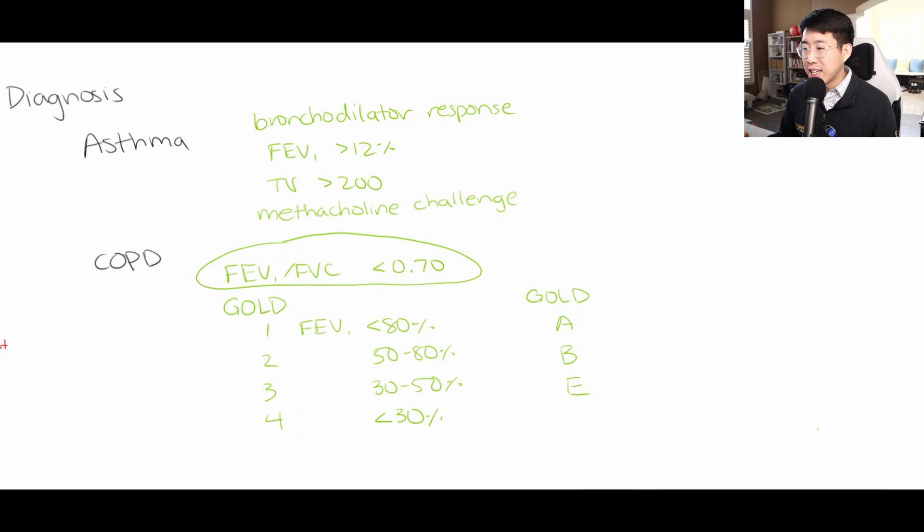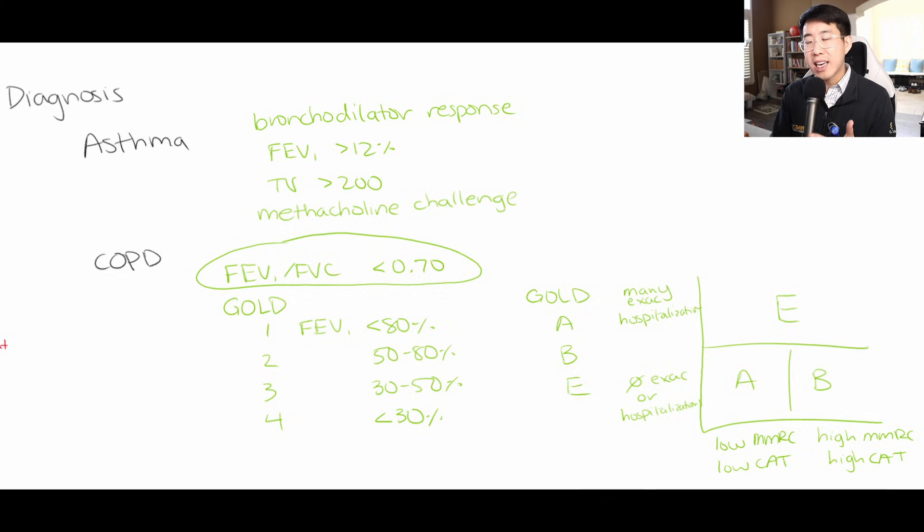In addition to this classification, however, we also have the GOLD A through E staging. So it goes from A, B, and E. So this is a little confusing because it actually used to be A, B, C, D. And what it helped us do was determine what inhaler regimen a patient should be on. But recently in the 2023 GOLD guidelines, this was updated to being A, B, and E. And really how it goes is this. So you've got GOLD E up here and you have A and B. So A and B, these are people with low scores on the MMRC or low CAT scores. These are basically measures of their quality of life. And then this would be high MMRC or high CAT scores. And then here would be no exacerbations or hospitalizations. And this would be basically many exacerbations. They define it as two plus exacerbations or ever being hospitalized for COPD exacerbation. So that's how you determine if the patient is GOLD stage A, B or E.